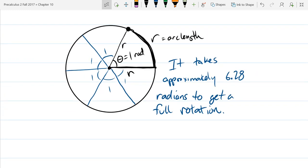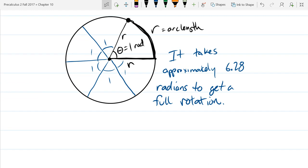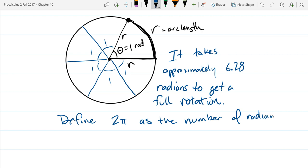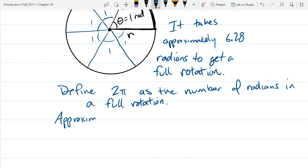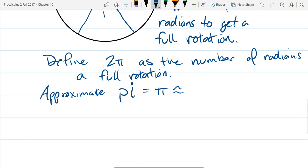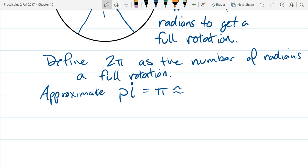Now this is a decimal that goes on forever and so what we do is say, oh well, whatever this number is we're just going to call it two pi. So two pi is going to be the number of radians in a full rotation. So we can approximate pi. The Greek letter the way you write it is, it looks kind of like an h with no antenna on it. So that's how you write a pi.